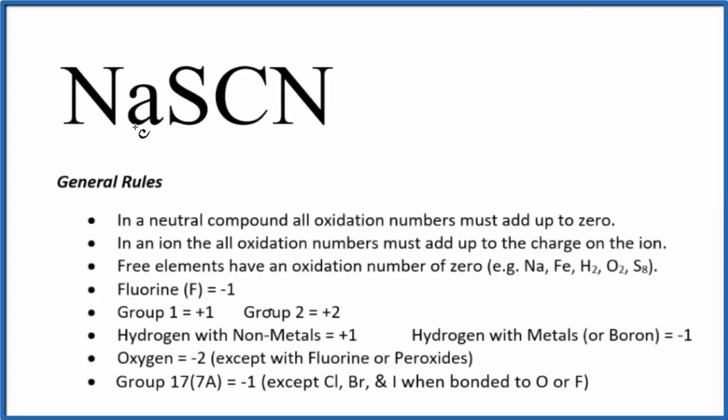To find the oxidation numbers for each element in NaSCN, we'll use these rules. First off, there's no negative or positive sign after the compound here, so it is a neutral compound. All the oxidation numbers are going to add up to zero.